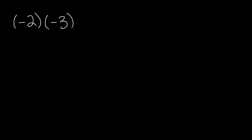Now let's do another problem. Sometimes we multiply two different integers, and sometimes what if we have three integers? We are multiplying negative 2 by negative 3, and also multiplying that by negative 5. Whenever you have three or more integers to multiply, it's better to do it two at a time. First, multiply negative 2 by negative 3: negative times negative — same signs — gives us positive 6.